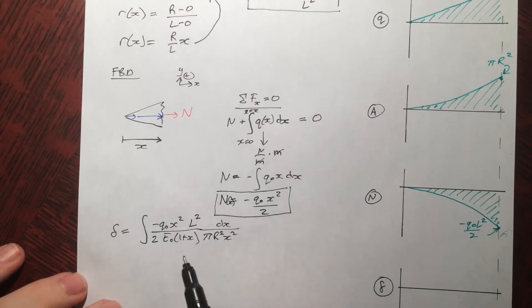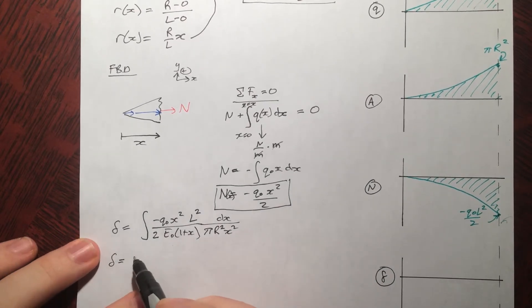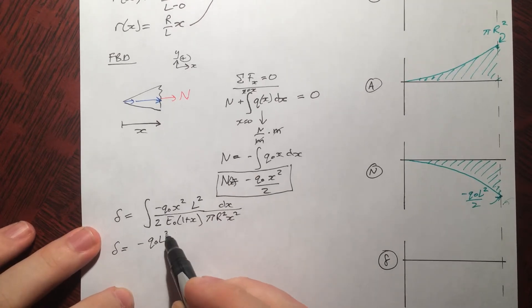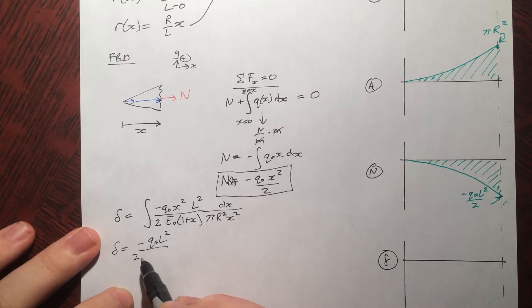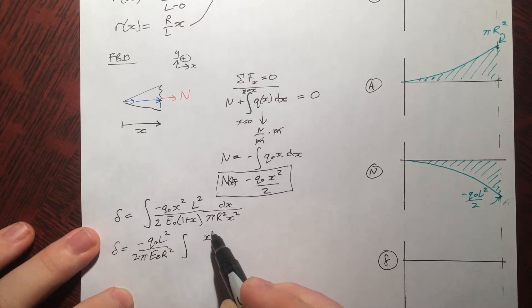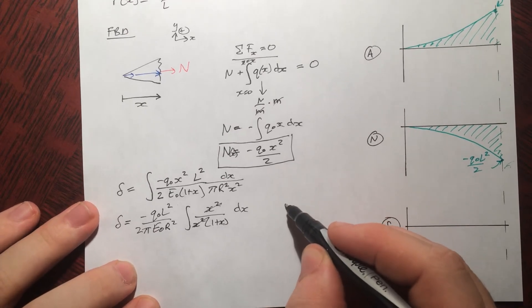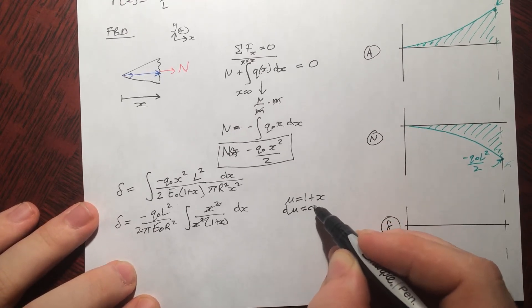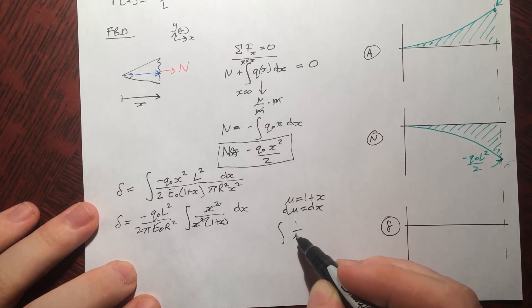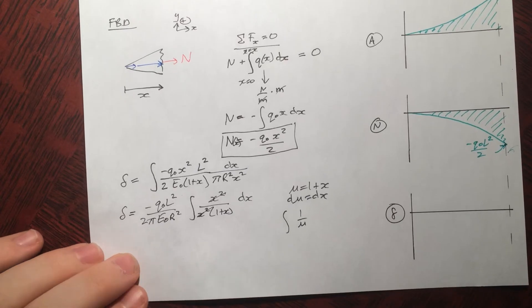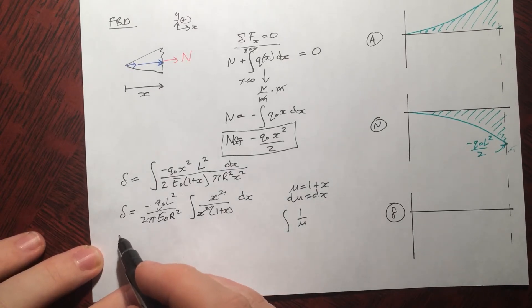Now we've got a bunch of constants here we can factor out. So delta equals to negative q not. That's a constant. L squared. That's a constant. And over 2 pi, e not, r squared. And we'll have to flip the integral. X squared over x squared one plus x dx. Nice and simply. These cancel off. The integral, one over one plus x. Well we can make a quick substitution. U equals one plus x. Du equals dx. So basically integrating one over u. That's ln right. ln.